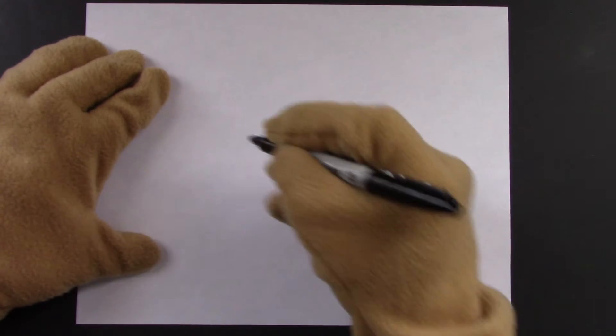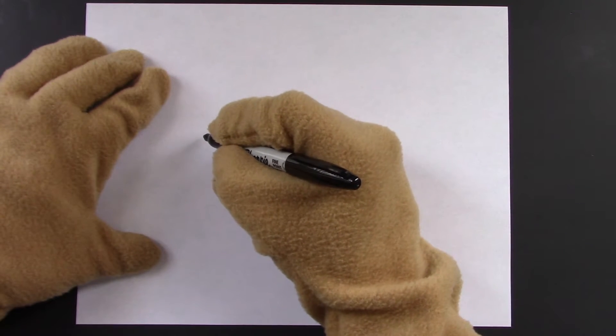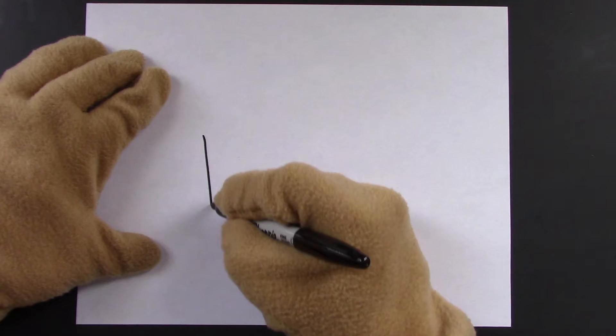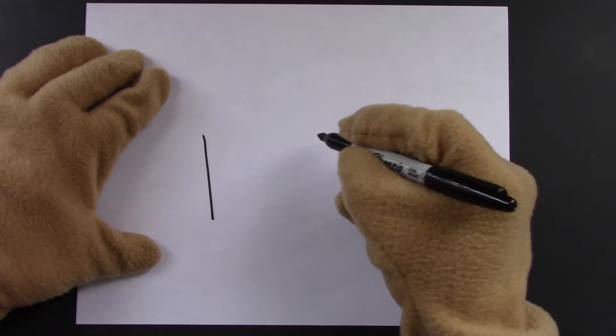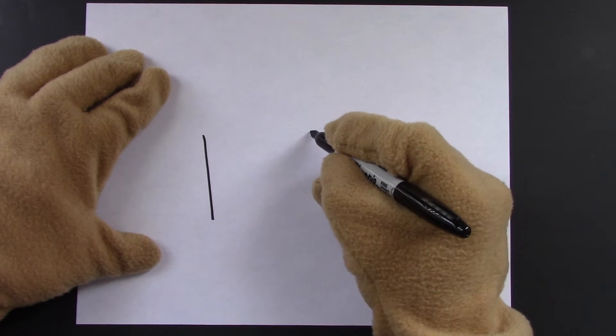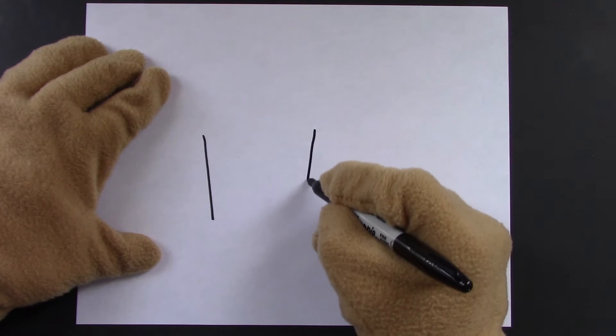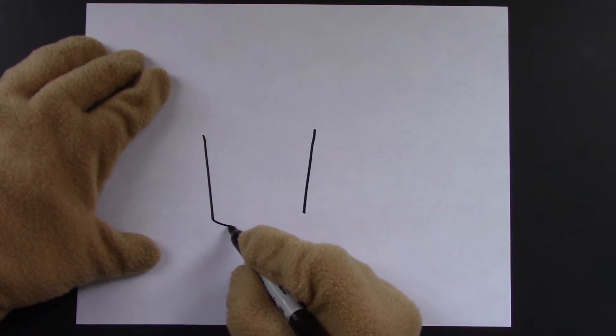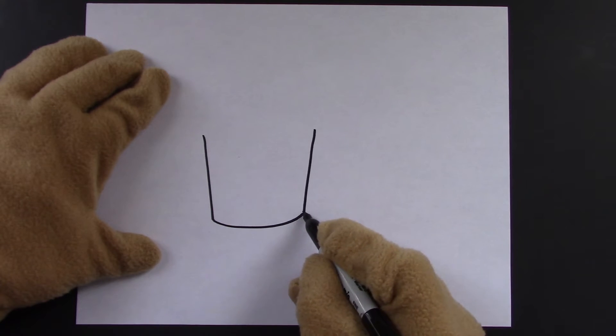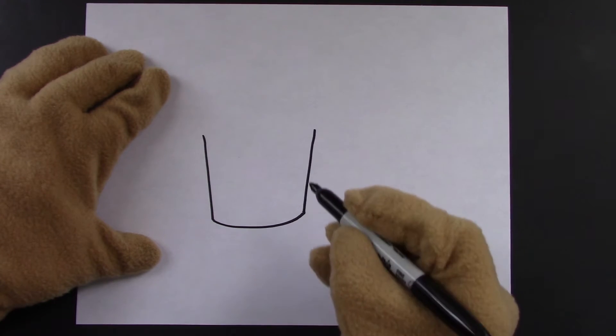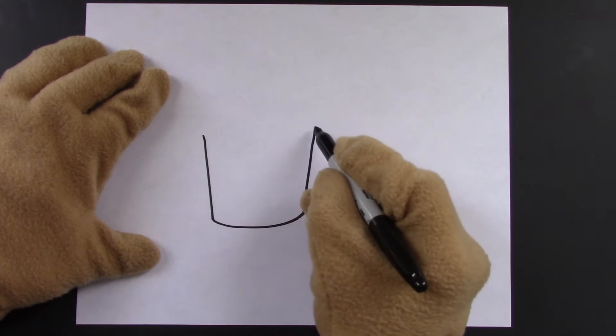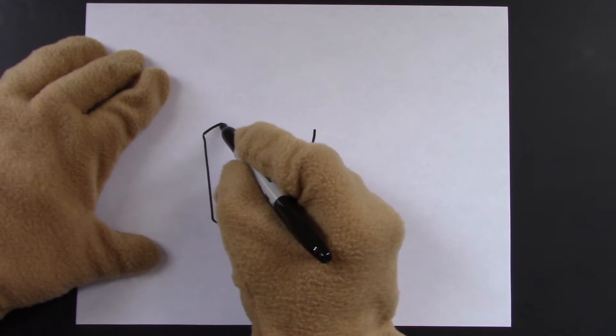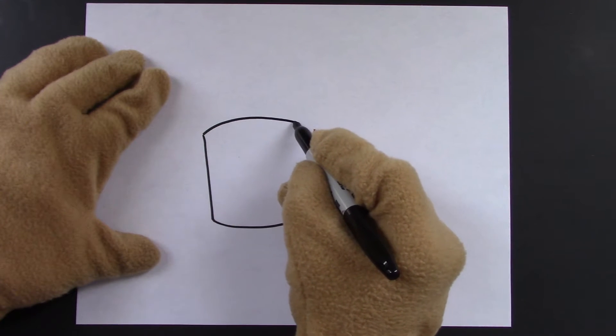So let's draw our cupcake. We'll start with two lines to be the sides of the cupcake. We'll make them a little bit closer at the bottom than at the top, just like this. Then we'll do a little curved line at the bottom. The curve gives it more dimension. Now we'll make a larger arch across the top, just like so.